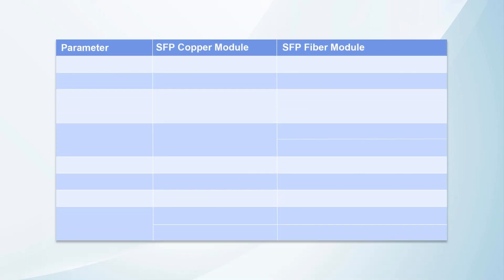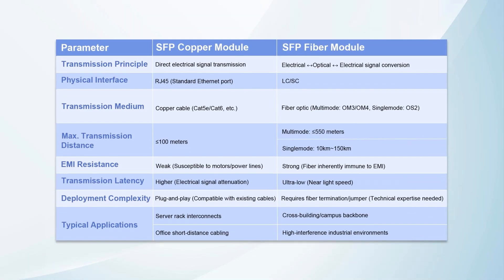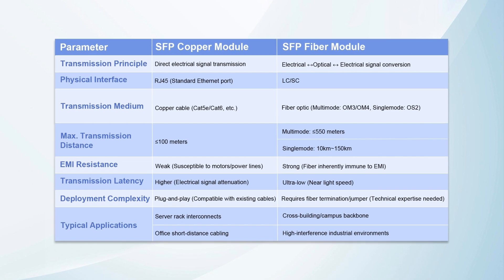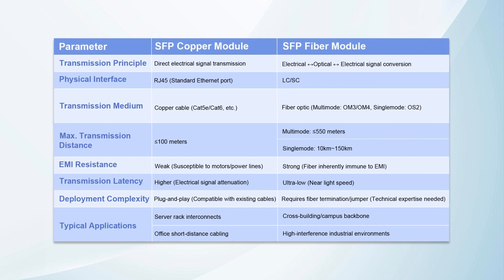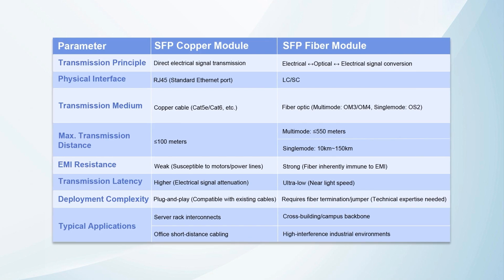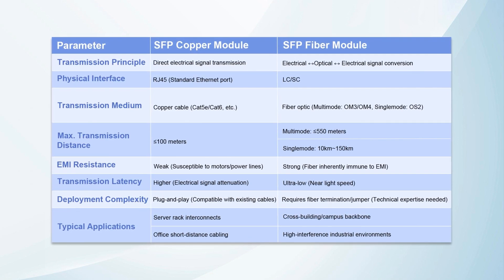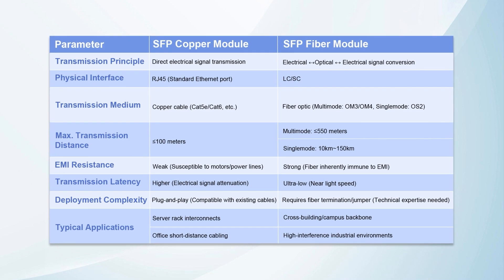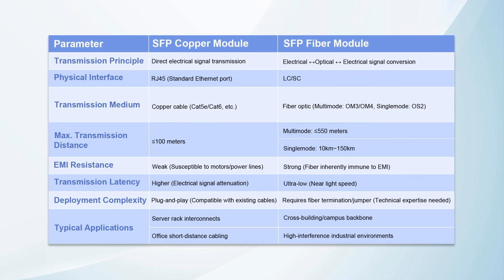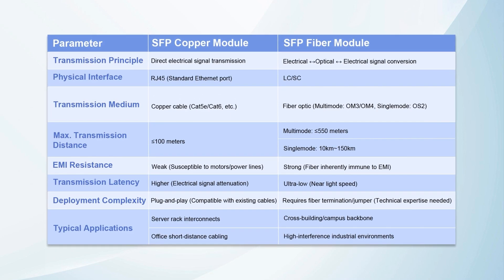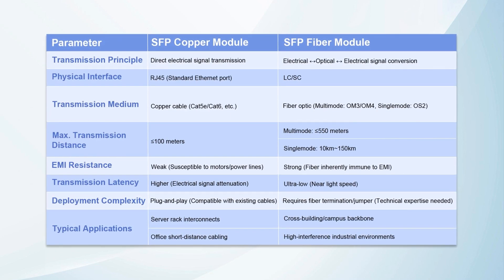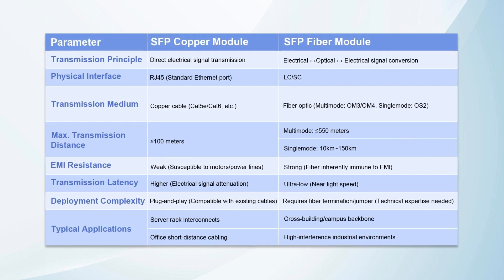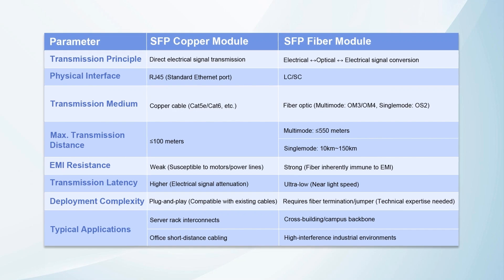In summary, both SFP copper and fiber modules have their advantages and limitations. For short-distance, cost-effective needs, copper modules are ideal. If the requirement is long distance and high stability, the fiber module is more worth investing in.